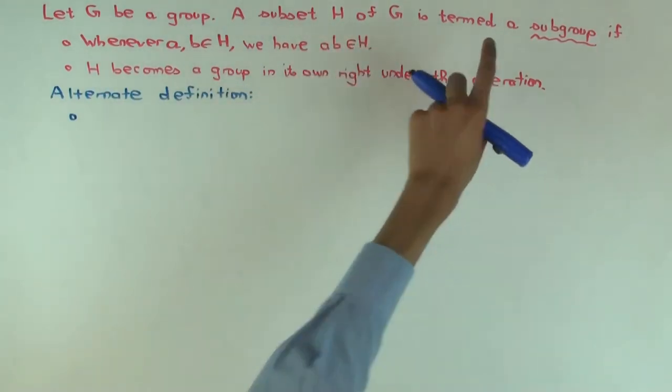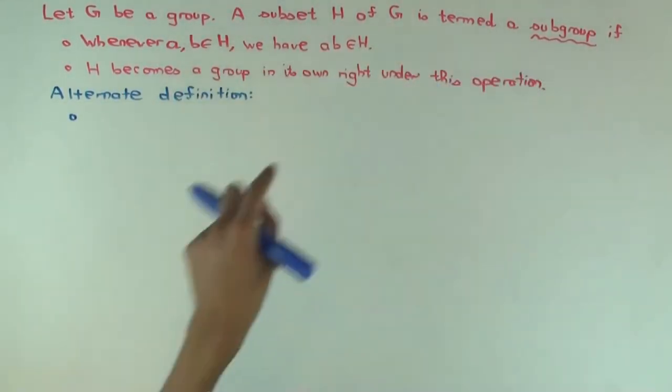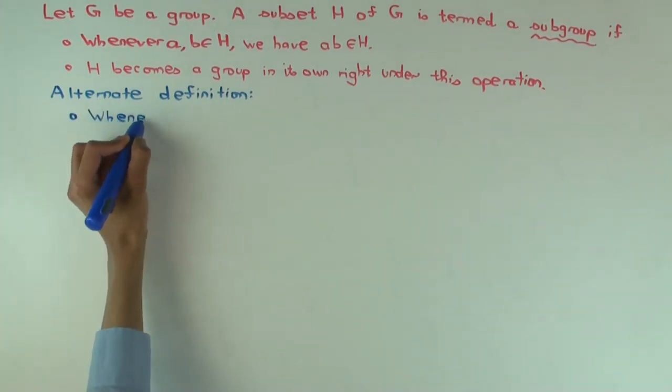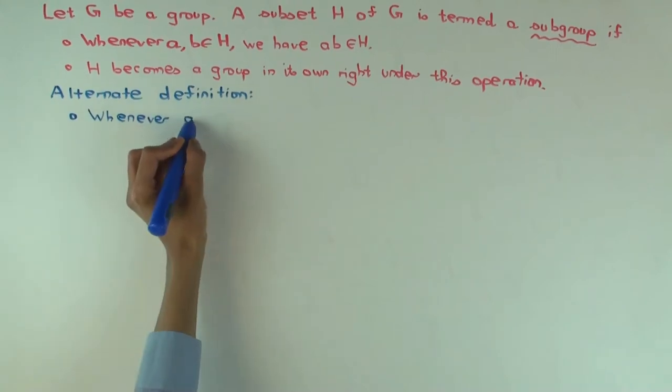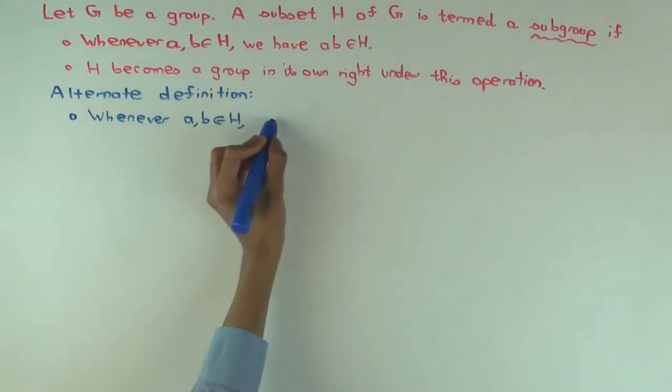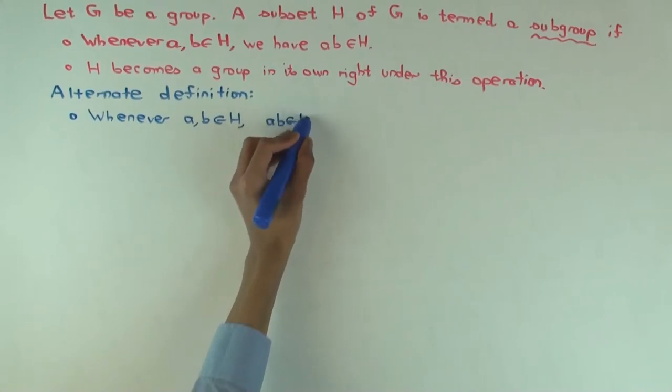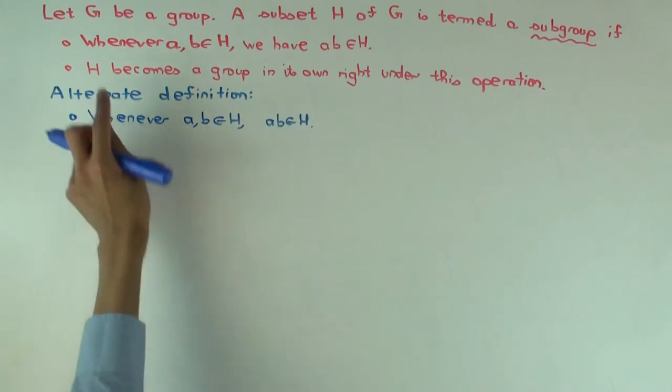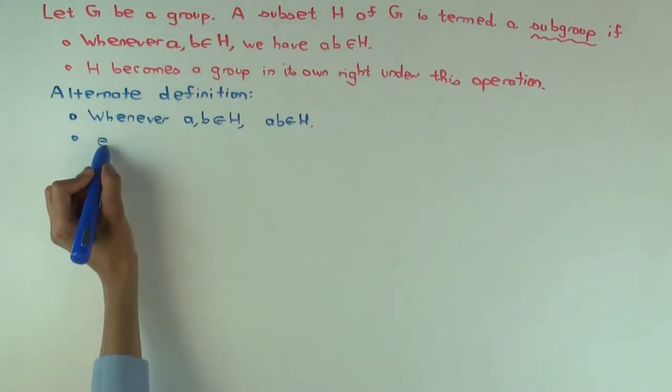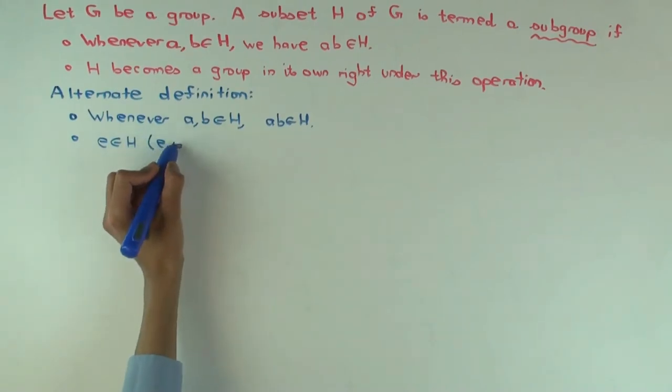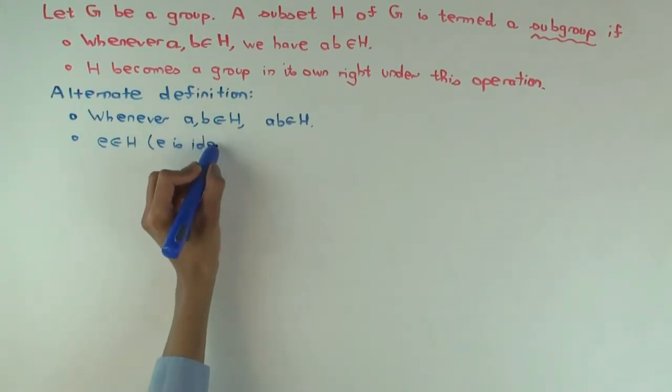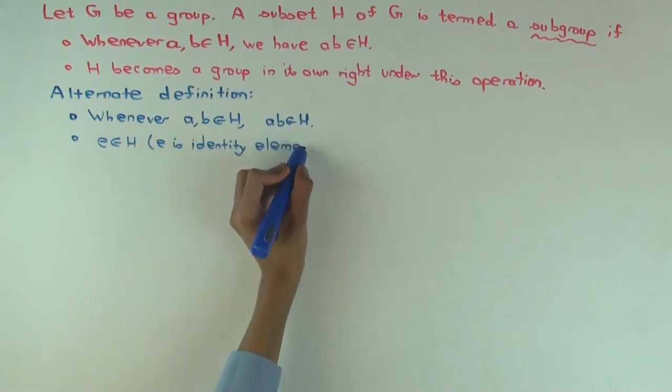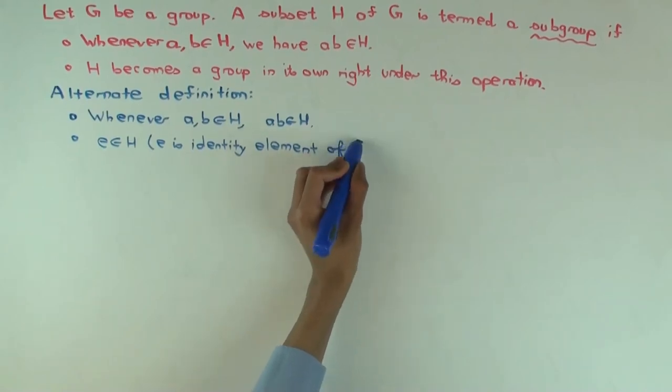The alternate definition is the same thing - H is a subgroup of G. The first line is the same. So the product of any two elements in there is also in there. But now you also say e is in H, where e is the identity element of G. We're requiring that the identity element of G should be in H.